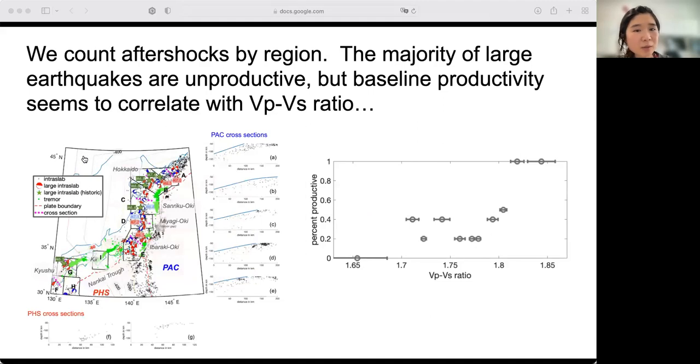In our study, we divide Japan into several regions and study the behavior of intermediate-depth aftershock sequences within each region. These regions span two different subducting plates: the older, colder Pacific plate and the younger, warmer Philippine Sea plate. Furthermore, our selected regions display along-strike variations in physical properties. We counted aftershocks after large earthquakes within each region using a number of methods.